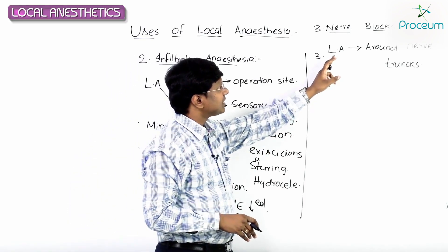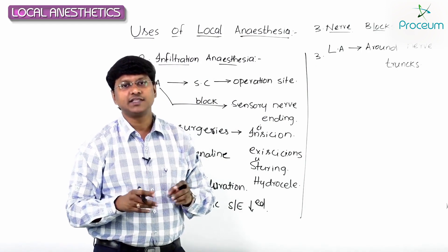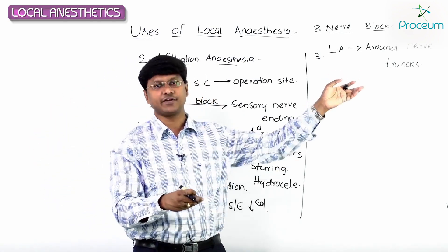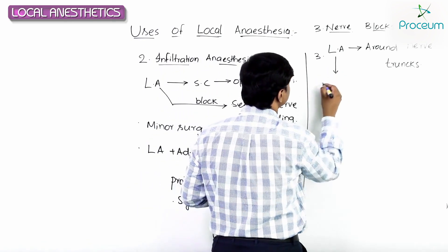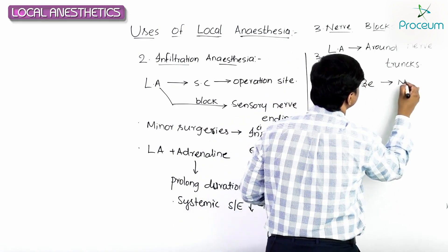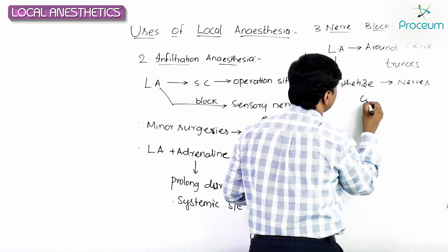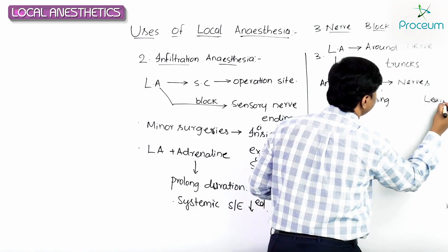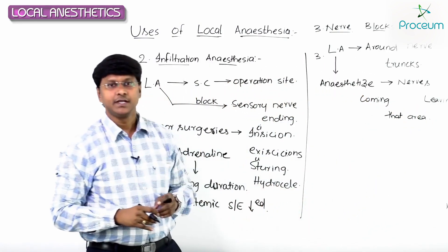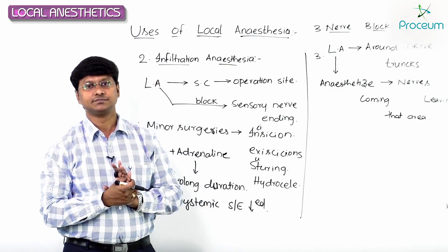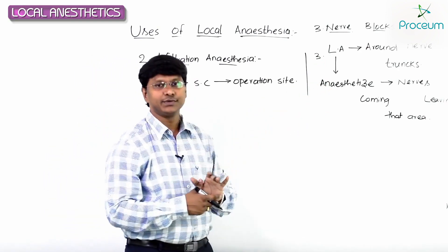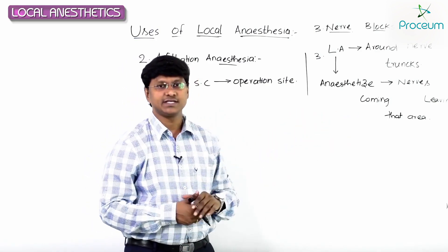Once you inject the local anesthetic drug around the nerve trunks, it will anesthetize all the nerves coming to that area and leaving from that area. The local anesthetic anesthetizes the nerves both coming and leaving that area.